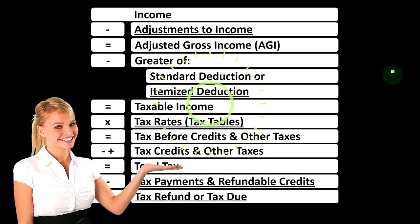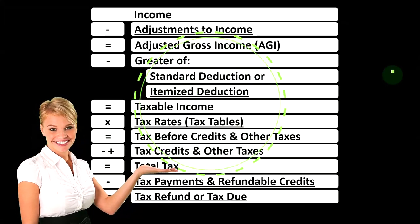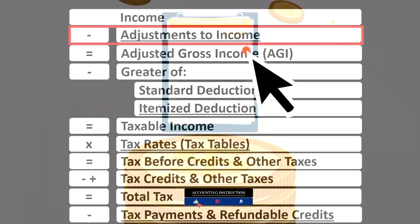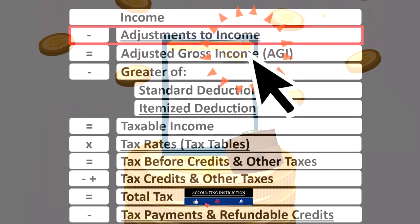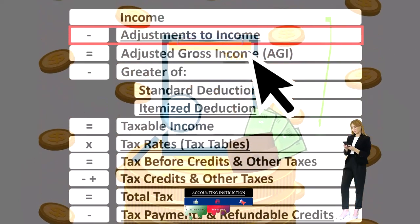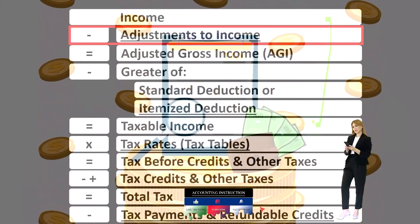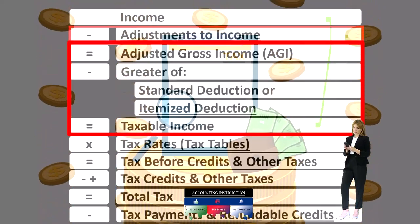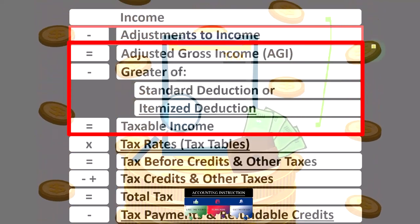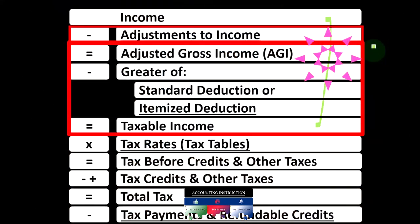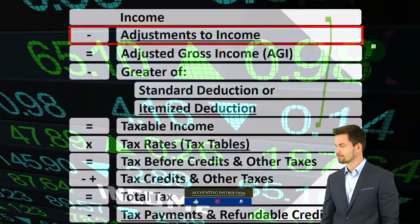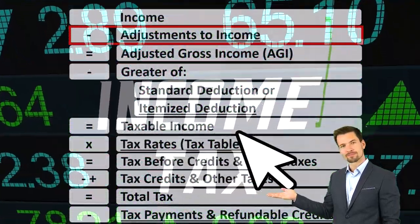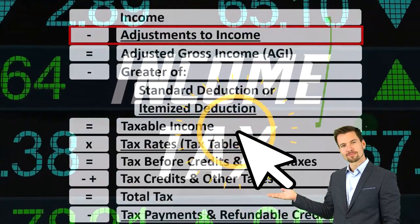Looking at our income tax formula, we're focused on line two: the adjustments to income. The first half of our income tax formula is, in essence, an income statement. We've got line one being the income minus the equivalent of expenses — those being the deductions — which gives us the equivalent of net income, that being the taxable income.